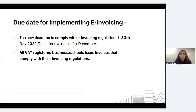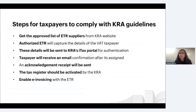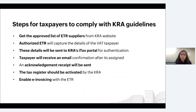Let's look at the steps you have to follow in order to comply with the KRA guidelines. First, browse the KRA website and go through the approved list of ETR suppliers — ETR is an electronic tax register. Once you pick your ETR, fill in your tax details, which will be sent to the iTax portal of KRA for authentication. Once authenticated and validated, you will receive an email confirmation, after which your tax register will be activated by the KRA and you are eligible to get started with e-invoicing.